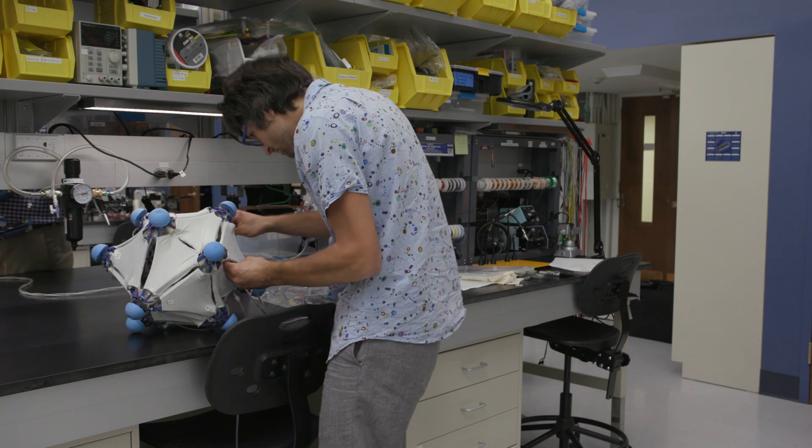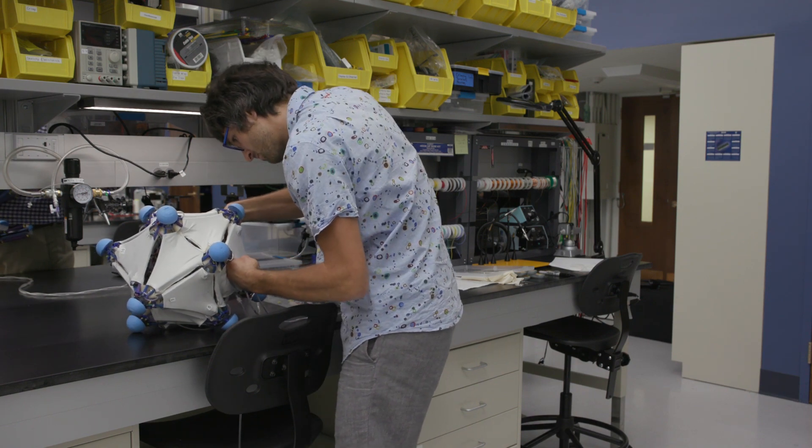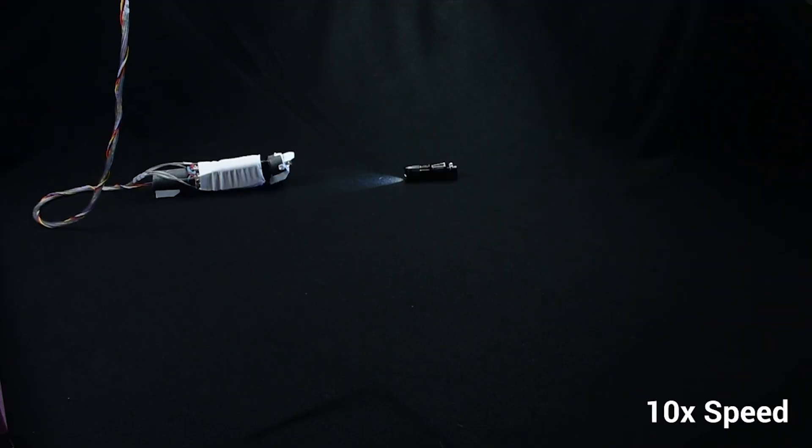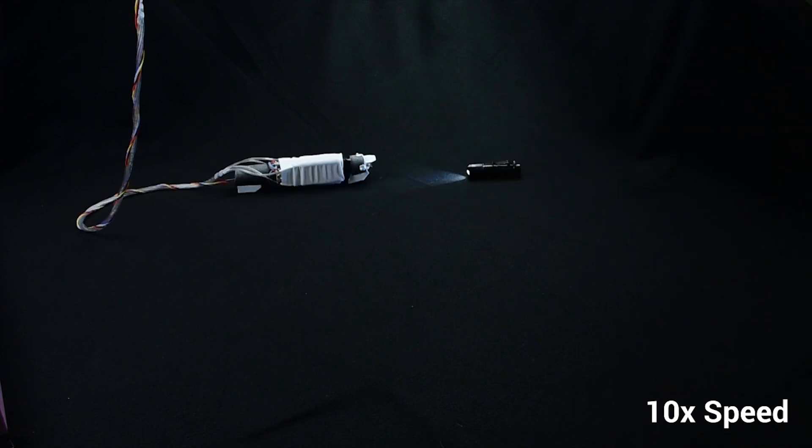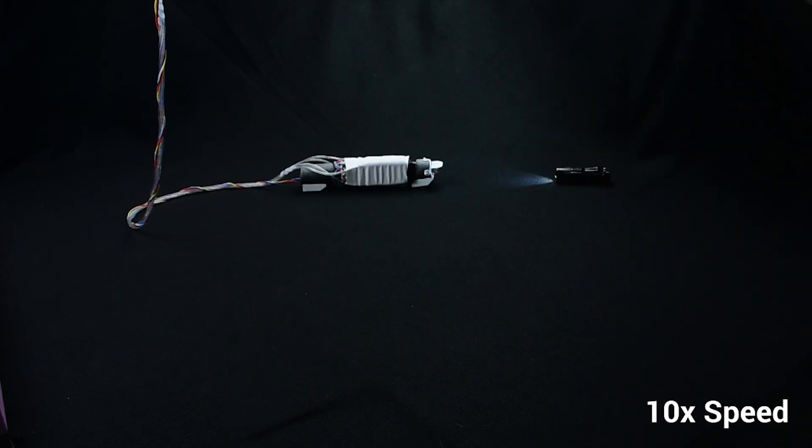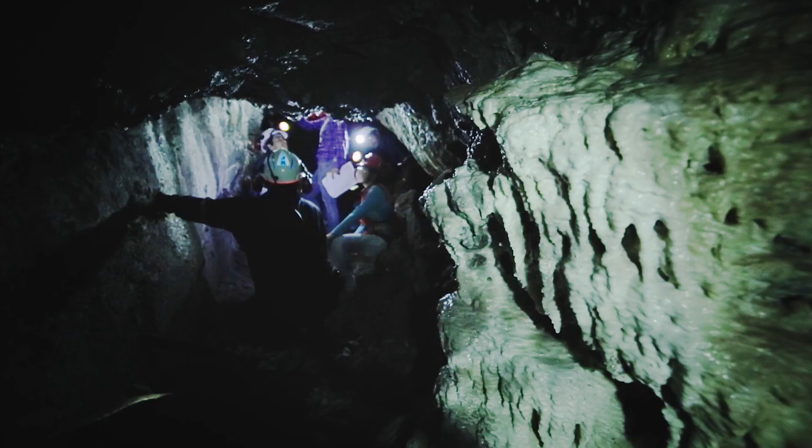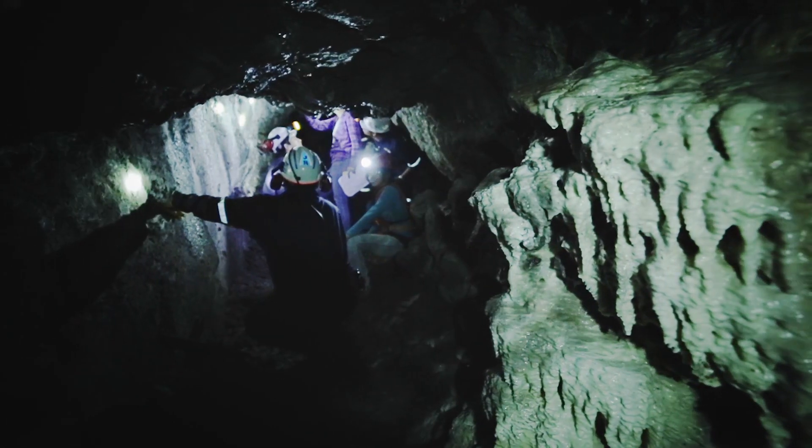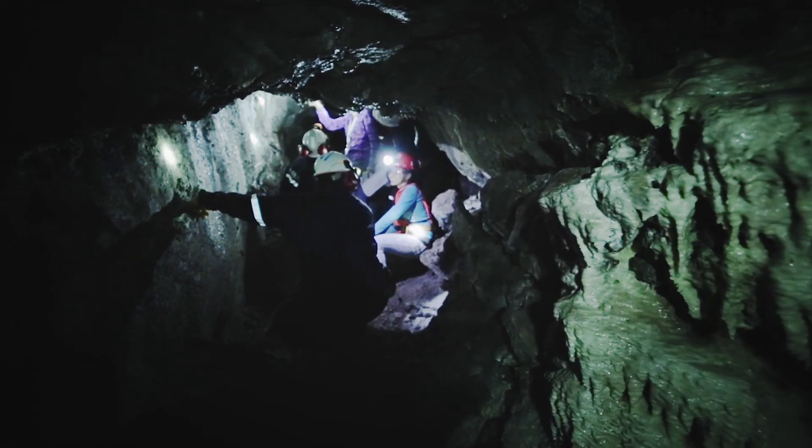Researchers didn't stop at using these skins to simply move objects. They outfitted one cylinder with a camera and adjusted its skin so it can crawl along like an inchworm. Such worm bots can be used in rescue operations and for exploring tiny spaces that humans are just too big to enter.